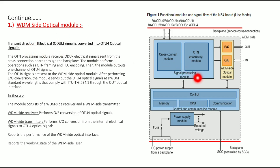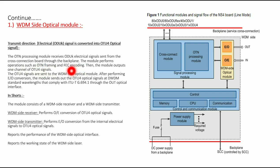Transmit direction: The OTN processing module receives ODUK electrical signals sent from the cross connection board via the backplane. These ODU electrical signals are received from the backplane by the cross connect module. This module performs operations such as OTN framing and FEC encoding. The module outputs the channel of OTU4 signal, which is sent to the WDM side optical module. After performing electrical to optical conversion, the module sends out the OTU4 optical signals at the DWDM standard wavelength, out through the output port.